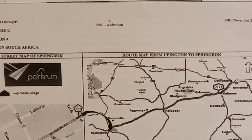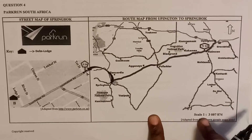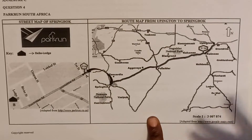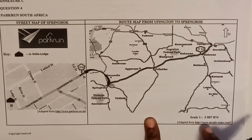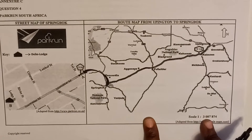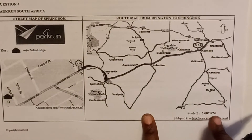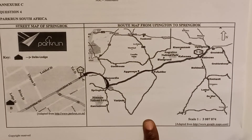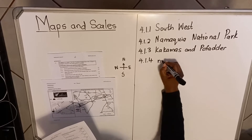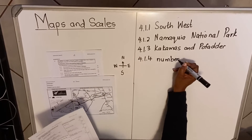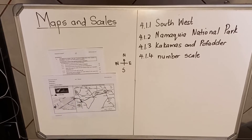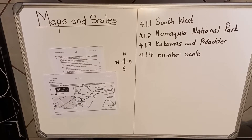Question 4.1.4: identify the type of scale used on the map. When you look at this map you find this scale. You can call it a ratio scale, a number scale, or a numerical scale — all three answers are correct. It is not the bar scale.